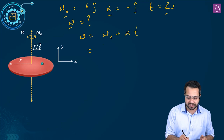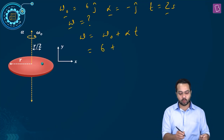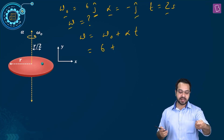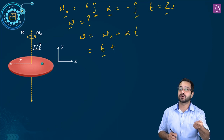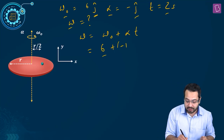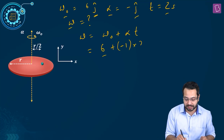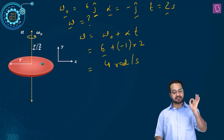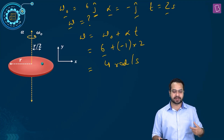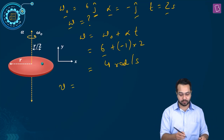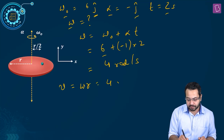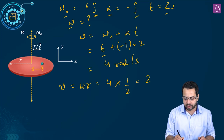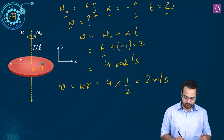Substituting: omega naught and alpha are in opposite directions, so taking omega as positive, alpha will be negative — substituting minus 1, multiplied by time 2. This comes out to be 4 radian per second. This is the angular velocity of the disk after 2 seconds. So the speed of the particle is omega times r: omega is 4, and the distance from center is half the radius, which is 0.5 meter. This gives 2 meter per second — that is the answer.